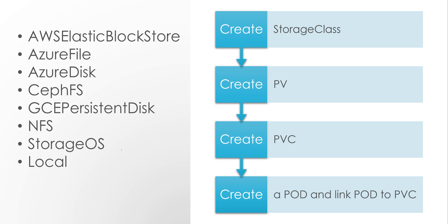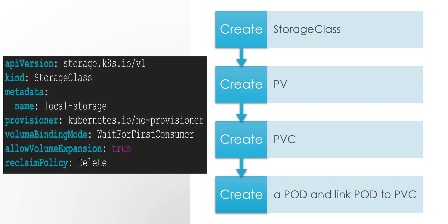Coming to the first step, the storage class. In this storage class we generally define what the storage class provisioner is — meaning who will provide the storage. It may be either a cloud storage, an NFS, or a local storage. In this demo I will use local. This is the sample YAML file. API version is storage.k8s.io version 1. The kind will be StorageClass, followed by provisioner — this is where we define who is providing this storage. The two fields we need to be aware of are: allowVolumeExpansion set to true, and reclaimPolicy set to either Delete or Retain.